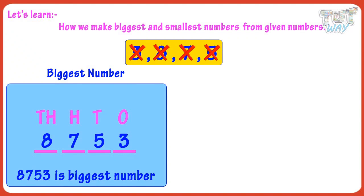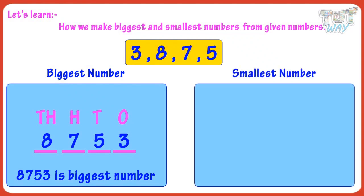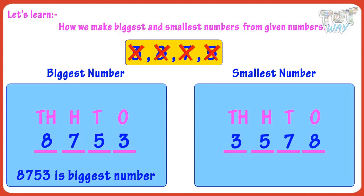Kids, you just need to always arrange the digits in decreasing order if you want to make the biggest number out of them. And you just need to always arrange them in increasing order if you want to make the smallest number. If you simply arrange these numbers in increasing order — that is, 3,578 — you have formed the smallest number possible out of the given digits.